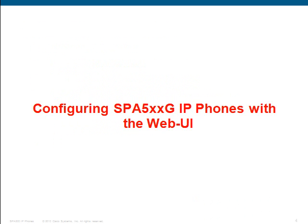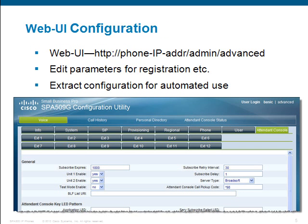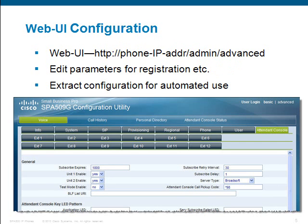Now we're going to look in more depth at configuring the phone using the web user interface. Direct any browser to http://[phone IP address]/admin/advanced. Once you're in the browser, edit the various parameters to configure your phone so it will register and display exactly what you want. When you're done configuring the parameters, click the save button at the bottom of the browser and the phone will then reboot.